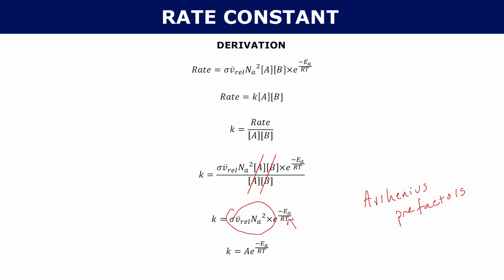Most of your temperature dependence comes from the T in e to the minus Ea over RT from the Boltzmann distribution. So Ea and A are treated as Arrhenius pre-factors even though A is technically a little temperature-dependent — but since this is just a model and that dependence is small, we neglect it.